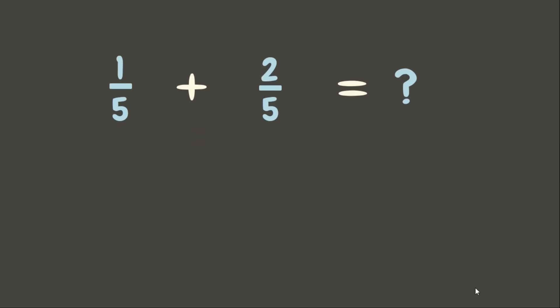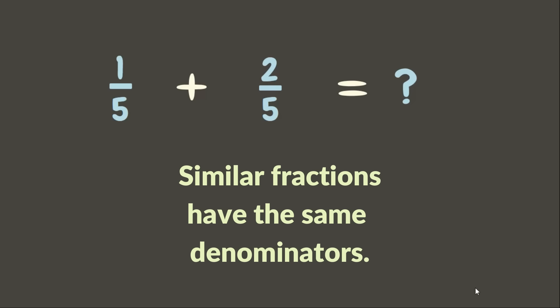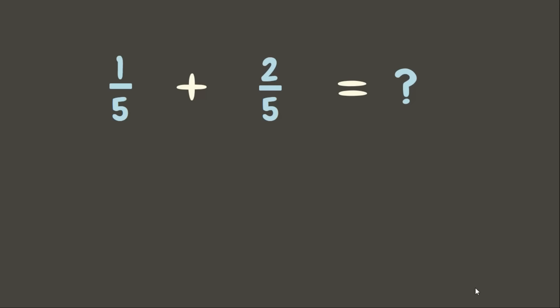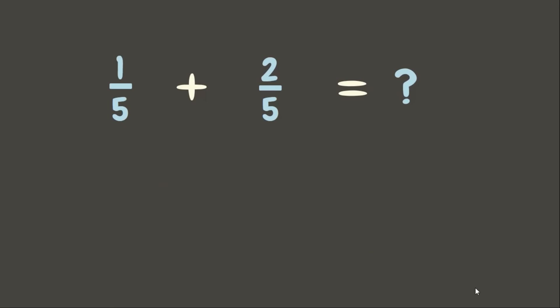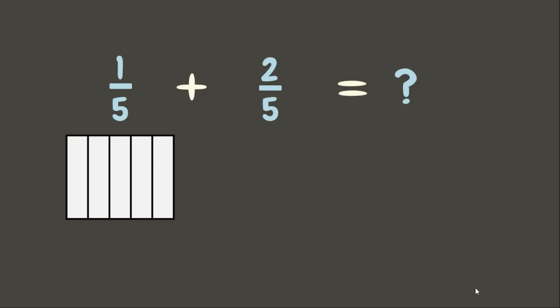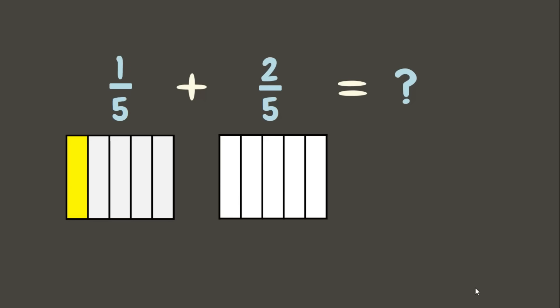Let's try to solve this first problem: one-fifth plus two-fifths. These fractions are similar fractions — similar fractions have the same denominators. Let's solve this by drawing some representations. One-fifth can be represented as a whole divided into five equal parts where one part is taken, while two-fifths is a whole divided into five equal parts where two parts are taken.